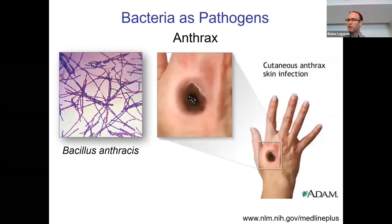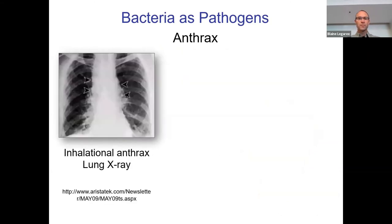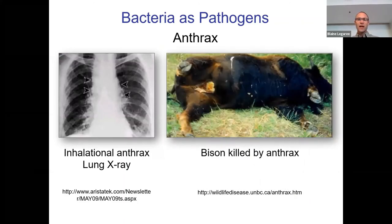A lot of bacteria are pathogens — about 80 to 85% of human pathogens are actually bacterial. Anthrax is one we talked about. Most people who get anthrax are dealing with animals or soil and get a skin infection. If you get an anthrax skin infection it can be treated by antibiotics. If you get inhalation anthrax, that can be a lot more dangerous because it's in your lungs and harder to treat. There are also a lot of animals that die from anthrax annually, particularly animals digging around in the soil where endospores have accumulated.